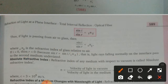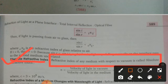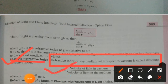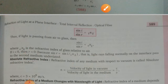Now we move to absolute refractive index. The refractive index of any medium with respect to vacuum is called the absolute refractive index. We can write n equals the velocity of light in vacuum divided by the velocity of light in the medium, that is n = c/v, where c equals 3×10⁸ m/s and v is the velocity of light in the medium.